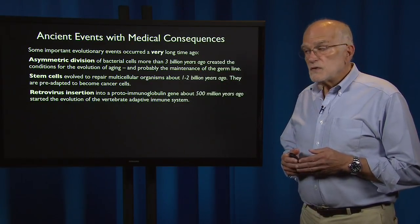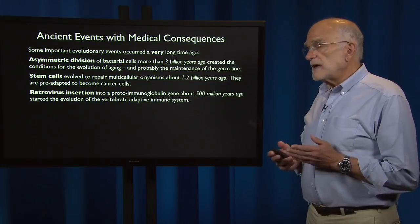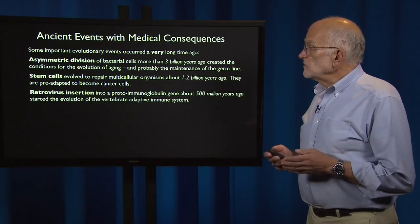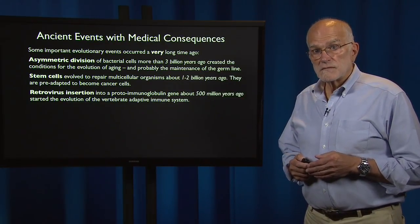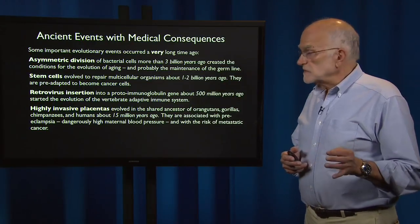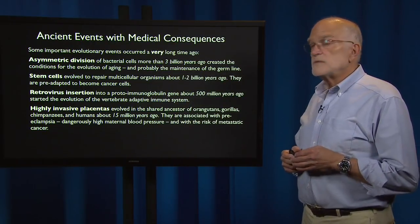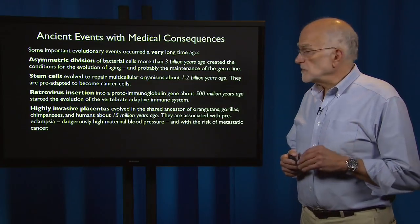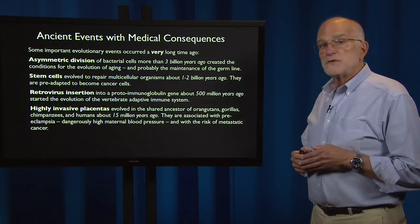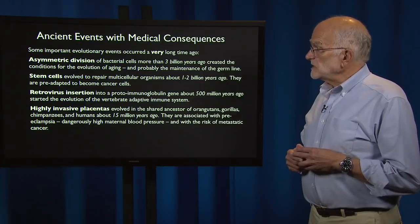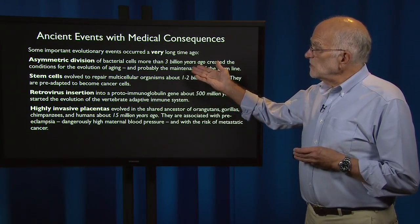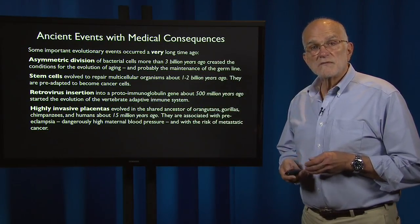Retroviruses inserted into a proto-immunoglobulin gene about 500 million years ago, and that started the evolution of the vertebrate adaptive immune system. Highly invasive placentas evolved in the shared ancestor of orangutans, gorillas, chimpanzees, and humans about 15 million years ago. They are associated with preeclampsia — dangerously high maternal blood pressure during pregnancy — and with the risk of metastatic cancer. So events occurring between three billion years ago and 15 million years ago continue to have implications for medicine.